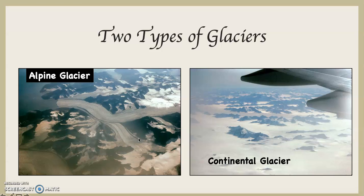The way continental glaciers move is something like this: if you had a griddle on your stove and took a ladle filled with pancake batter, tilted the ladle up above the griddle, the pancake batter flows out onto the griddle and then flows outwards from a central raised part of the pancake. That is kind of the way continental glaciers flow — they flow outwards from a central area and are not controlled by the configuration of the underlying landscape, unlike an alpine glacier, which follows the movement of the valley.